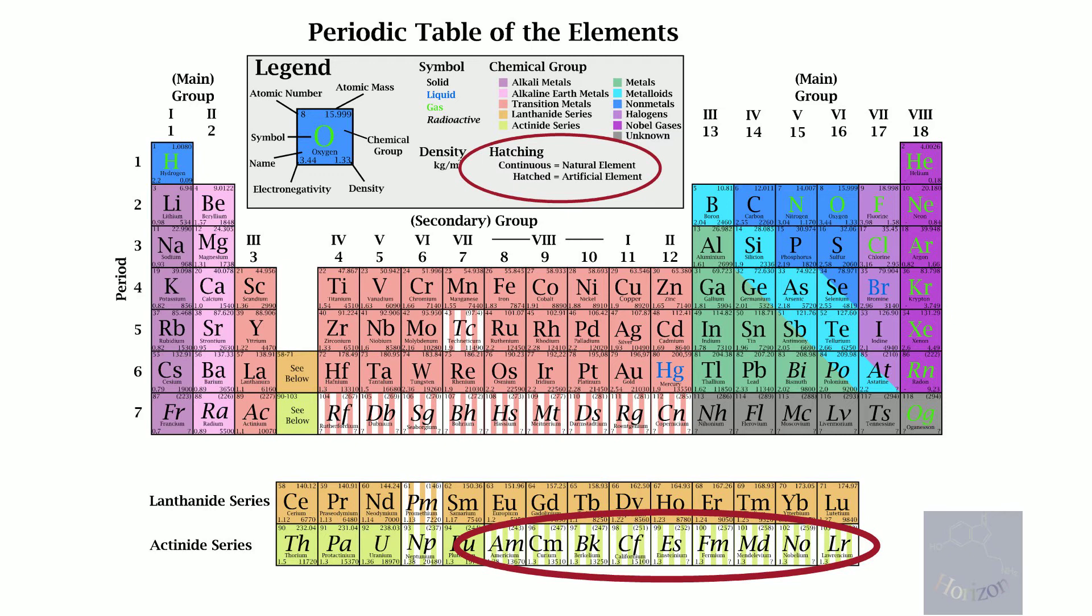The structure of the periodic table makes it possible to identify missing elements and predict their properties based on their group assignments.